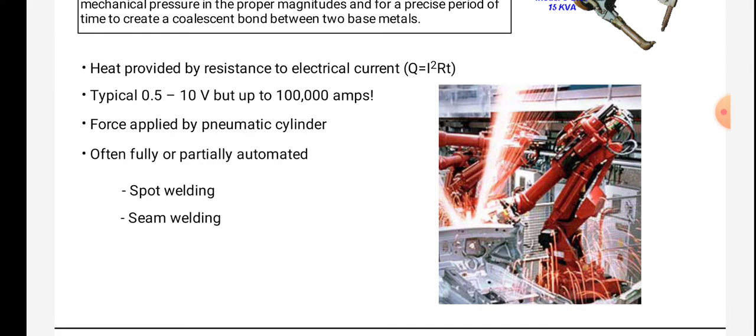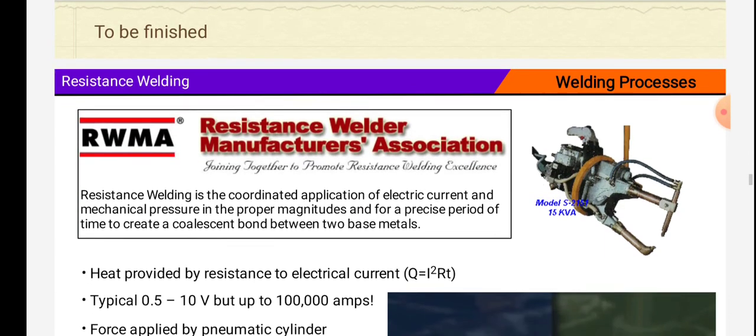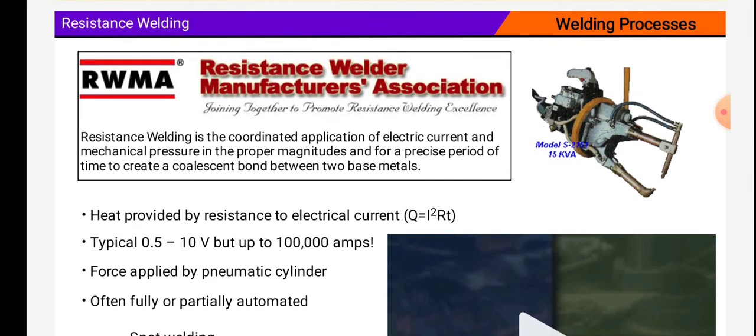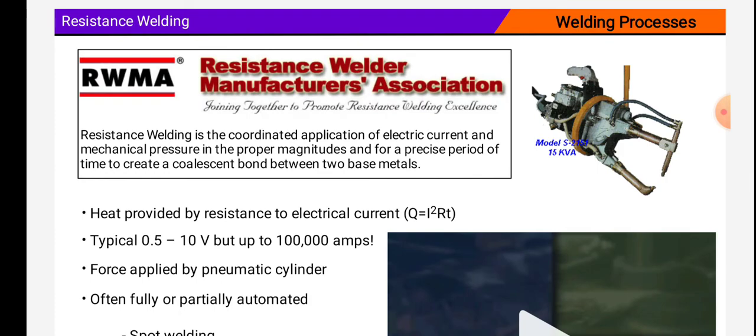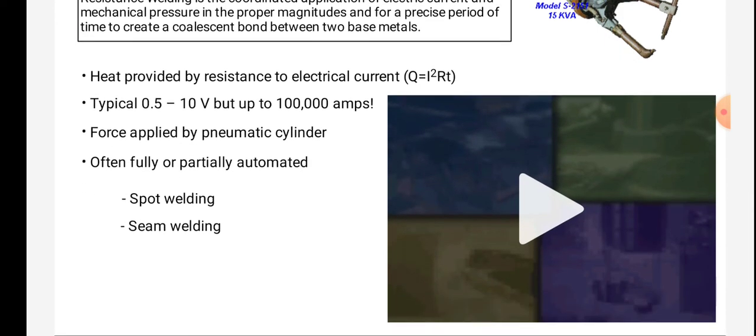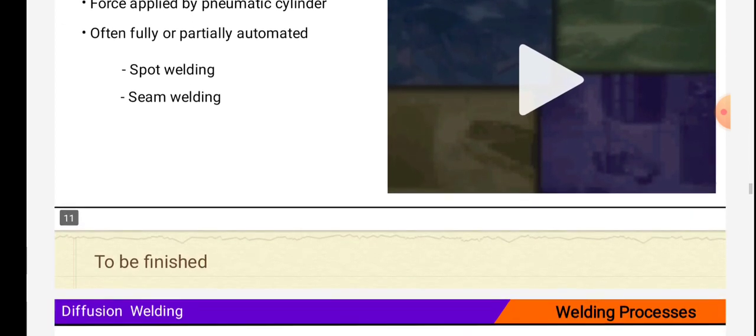These are the examples of resistance welding. Again, Resistance Welder Manufacturers Association says that heat provided by resistance to electrical current, typical 0.5 to 10 volts but up to 100,000 ampere. Force applied by pneumatic cylinder, often fully or partially automated. Spot welding, seam welding.